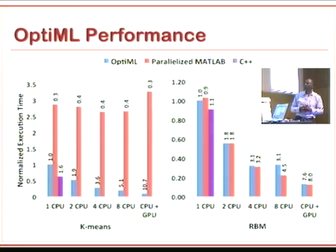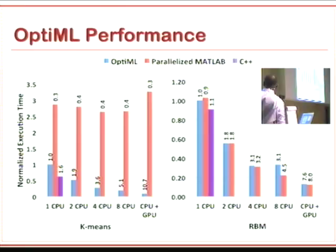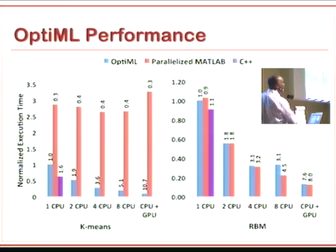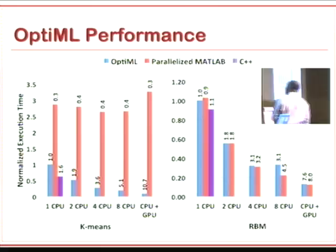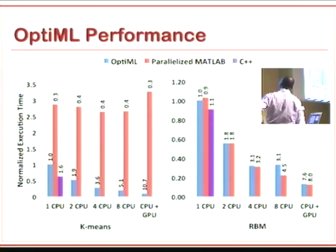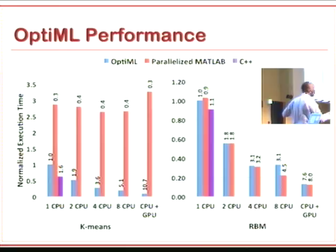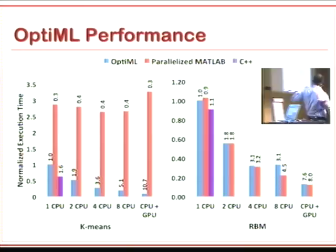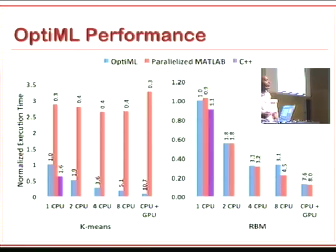That was k-means, which requires a lot of optimization for good performance. Here's another example: a restricted Boltzmann machine, where the calculation is dominated by a matrix multiply. This is a case where you'd expect MATLAB to do pretty well — and in fact it does. C++ is a little faster but doesn't parallelize. MATLAB scales pretty well, and OptiML also does well wherever MATLAB does well. In many cases where MATLAB does not do well, OptiML also does well. OptiML has the ability to get to much higher performance because it generates code designed to run really well and can be targeted to a range of different architectures.